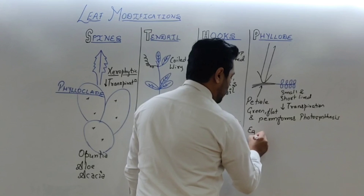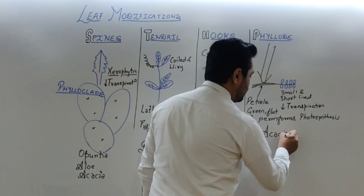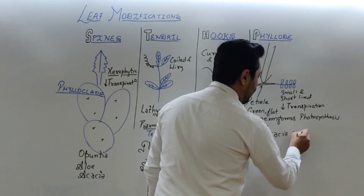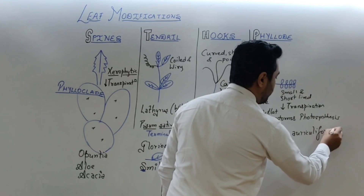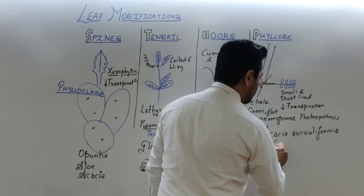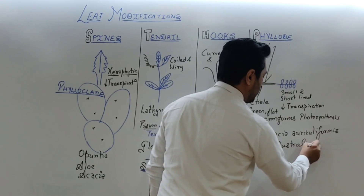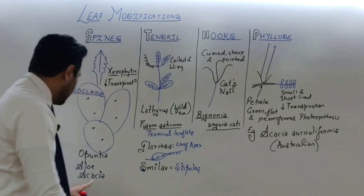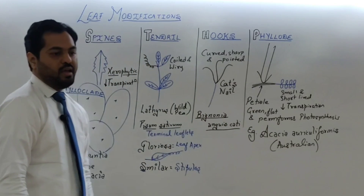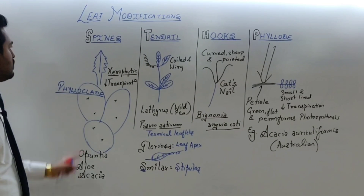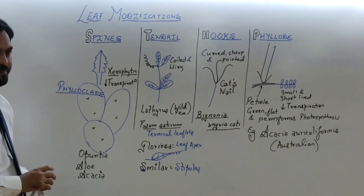An example that is observed is the plant Acacia auriculiformis, also known as Australian Acacia. These are the four major modifications of leaf: spines, tendril, hook, and phyllode.